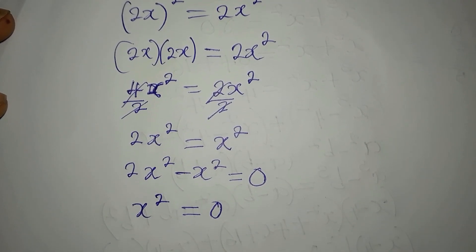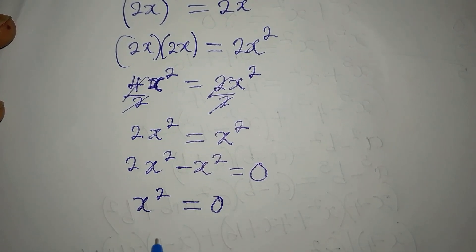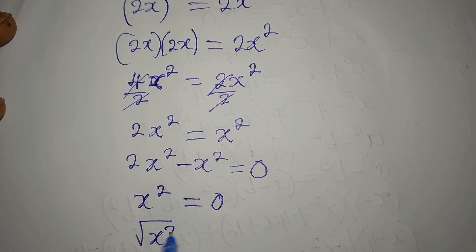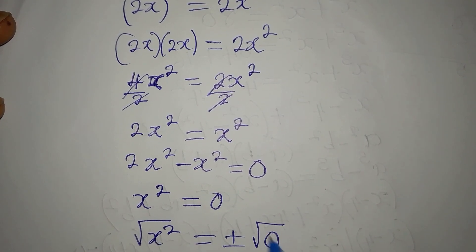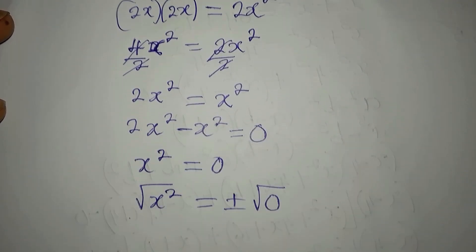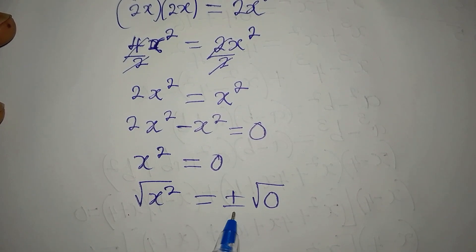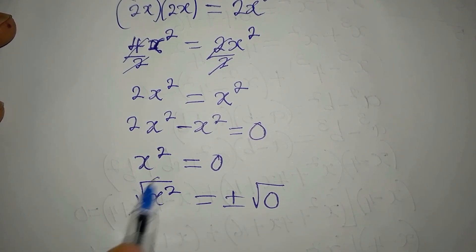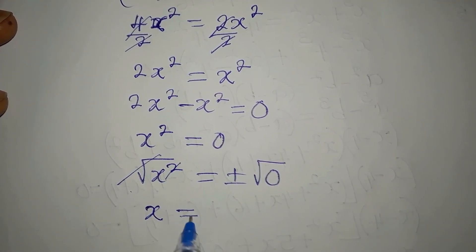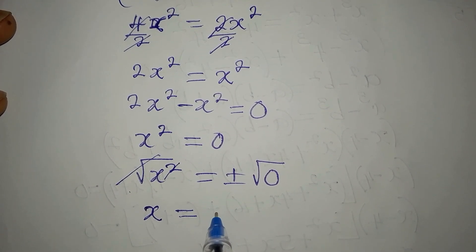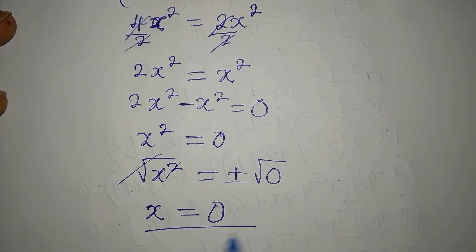And from here it's obvious that we can take the square root of both sides, so that we have plus or minus the square root of x², the square root of zero. But there's nothing like negative zero or positive zero. Now our x will be equal to zero. So this is the only solution to this equation: (2x)² = 2x².